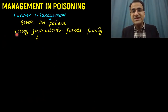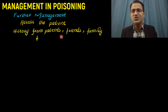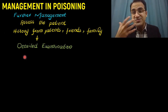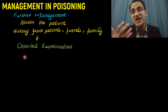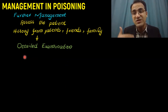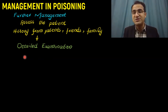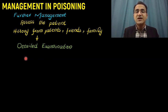In further management, assess the patient and take history from the patient if conscious, or from friends and family. Perform a detailed examination: look for respiratory rate, respiratory depression, heart rate — whether there is tachycardia or bradycardia — as that can give you the diagnosis of the type of poison ingested. Look for the pupils.